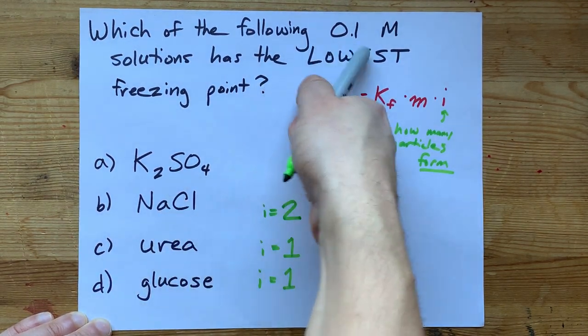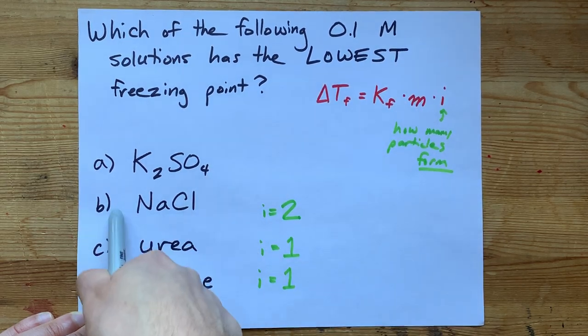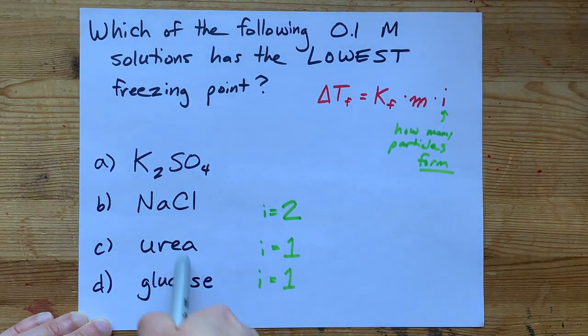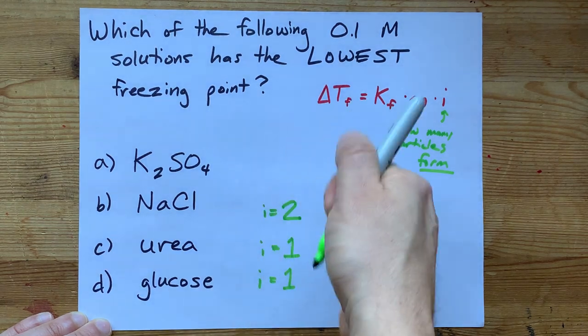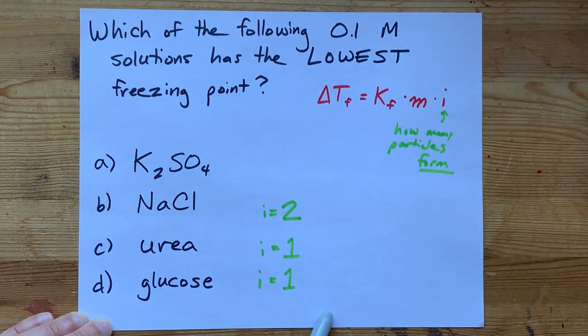So a 0.1 molar solution of NaCl will have a lower freezing point than a 0.1 molar solution of either urea or glucose.